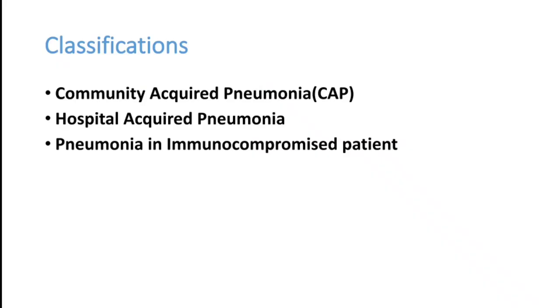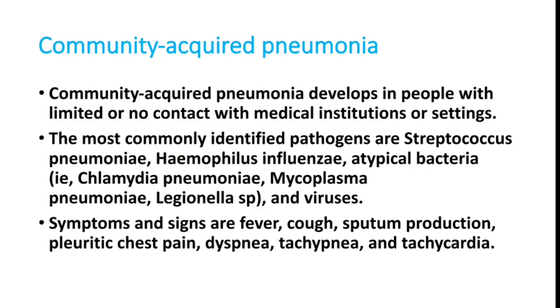We can see the classification of pneumonia first — it is a clinical classification. There are three major types that come to our clinical practice: community acquired pneumonia, hospital acquired pneumonia, and pneumonia in immunocompromised patients. Treatment for all these pneumonias is different, which is why they are classified separately.